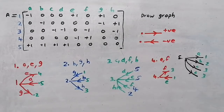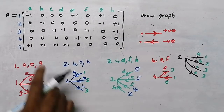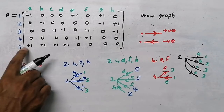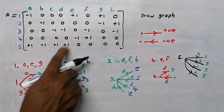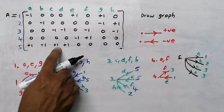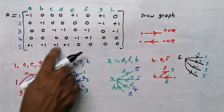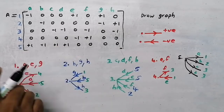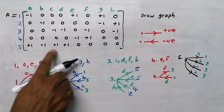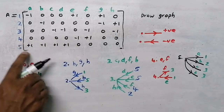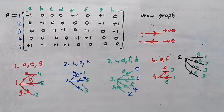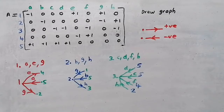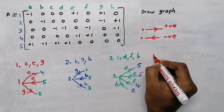Now as you can see here at node 5, there are a lot of branches: a, b, c, d - and all branches are positive. So I am going to take node 5 as my reference node. Now I am going to take node 4.